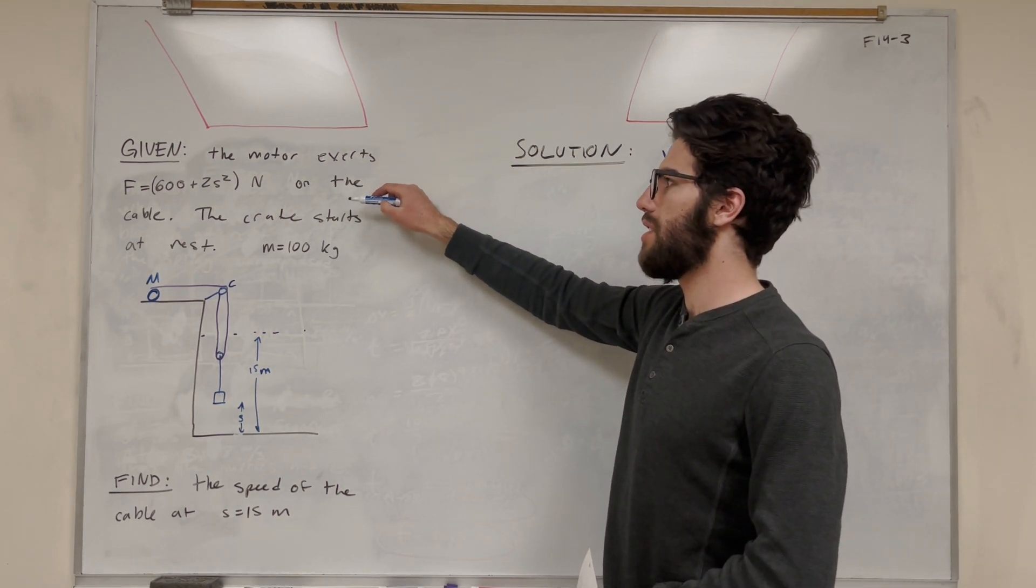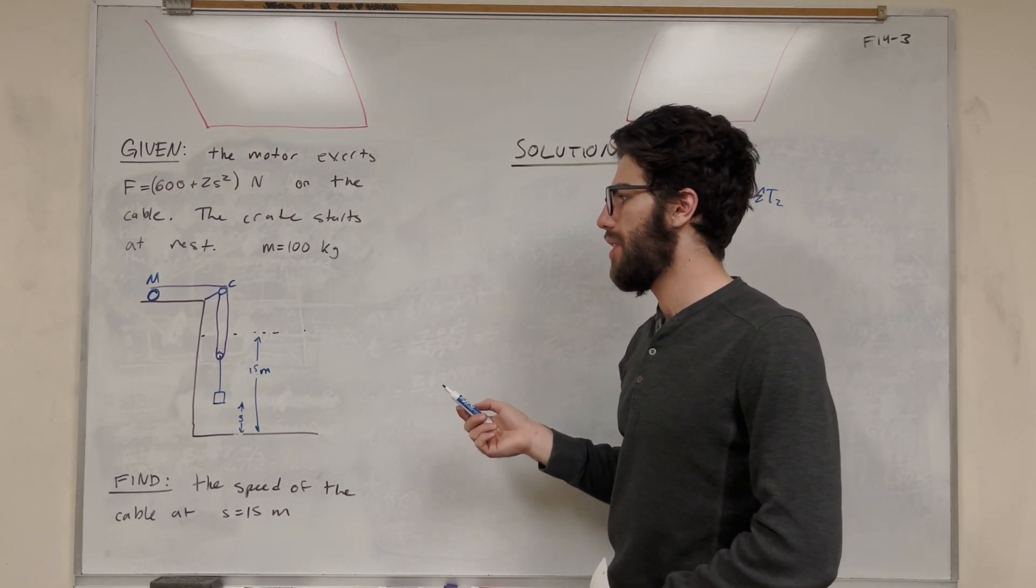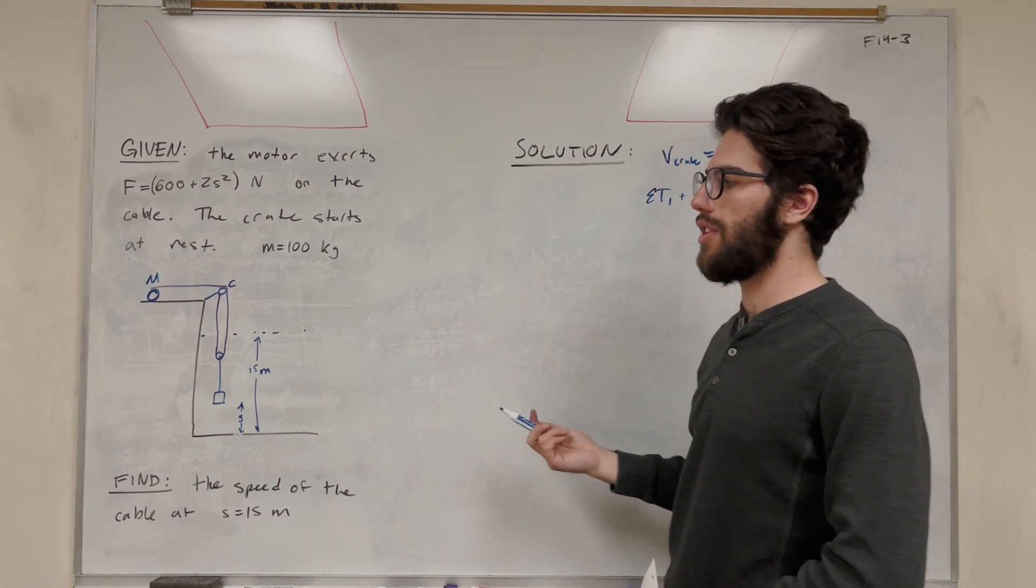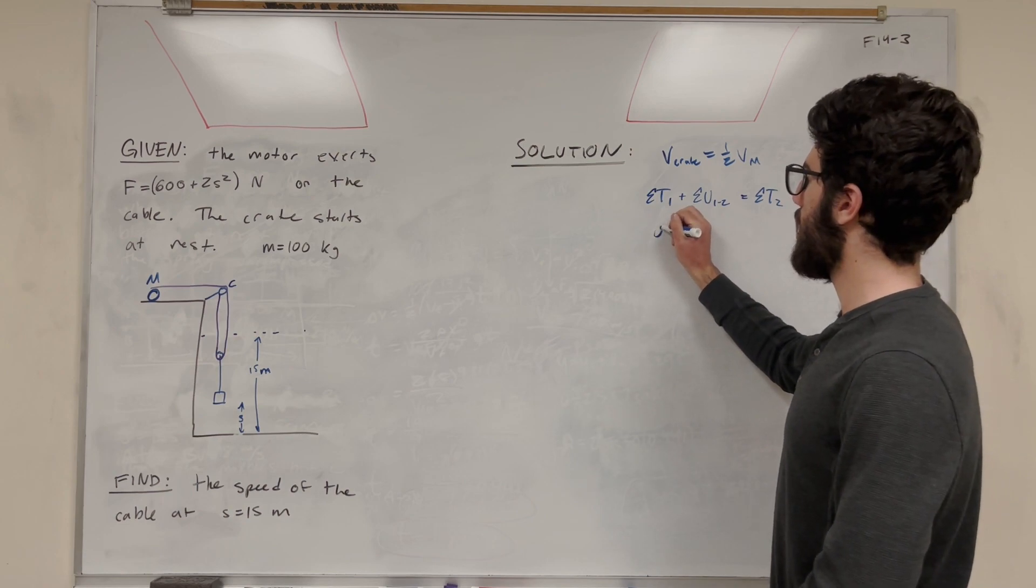So we know that the crate starts at rest. Useful to know. So that means if the crate starts at rest, we don't really have any energy at the initial. We're starting at our bottom position, so it's not even gravitational. So we can set that equal to 0.